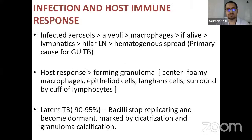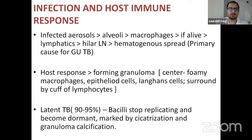Regarding infection and host immune response: initially, infected aerosols reach the alveoli from which macrophages kill the bacteria. If they persist alive, it reaches to the lymphatics and then to the hilar lymph nodes, and finally spreads hematogenously to distant organs — the most common cause for genitourinary TB. In the host response, granulomas form centrally with foamy macrophages, epithelial cells, Langhans giant cells, surrounded by a cuff of lymphocytes. 90 to 95% of tuberculosis is in latent form where bacilli stop replicating, become dormant, and granuloma calcification forms.